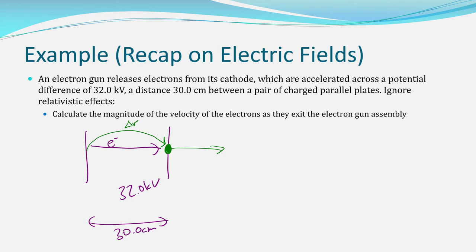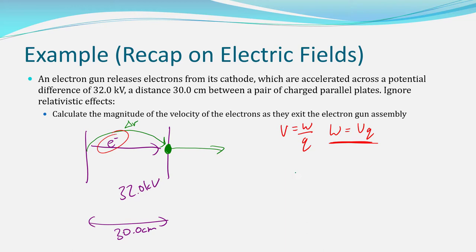The first thing you need to recognise is the equation from your formula sheet: the work done on the charge equals the voltage multiplied by the charge itself. This work is done by the field on the electron, accelerating it and providing kinetic energy. So you can say this equals kinetic energy, which is ½mv², and if you rearrange that equation you get v = √(2VQ/m).